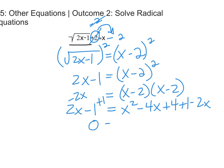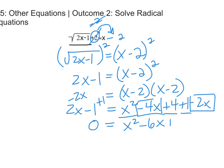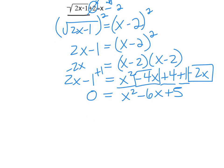That leaves us with 0 on the left. Combining like terms: x squared, minus 4x minus 2x gives us minus 6x, and plus 4 plus 1 gives us plus 5. So our new equation is 0 equals x squared minus 6x plus 5, which factors quite easily into x minus 1 times x minus 5.